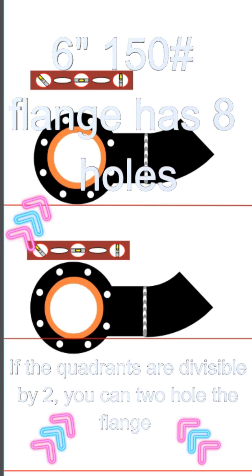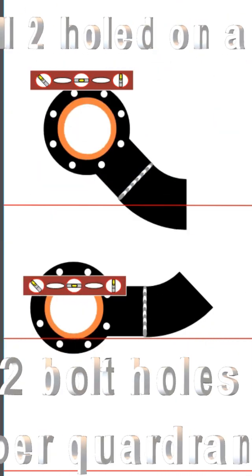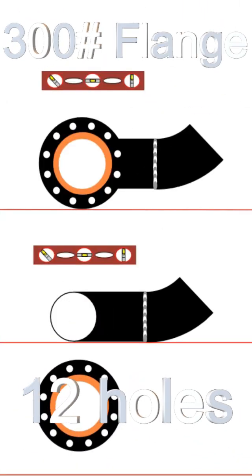So we're going to put that flange on there, we're going to check it for two hole, everything's good, we're going to roll that configuration up and it's still two hold. The next flange we're going to put on is the 6 inch 300 pound flange.